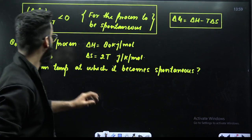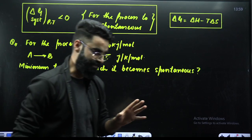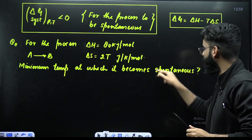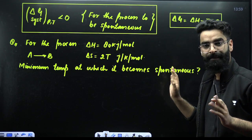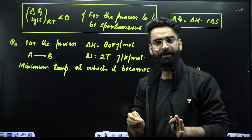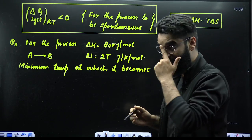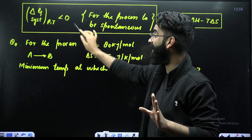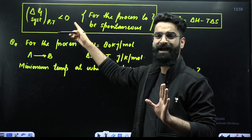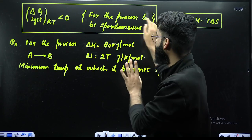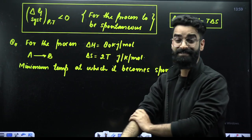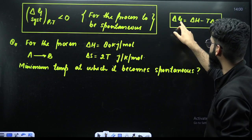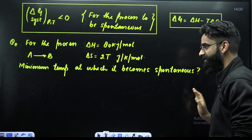Concept number 2: questions based on Gibbs free energy. A particular set of questions asks for the minimum temperature at which a process is spontaneous. For any process to be spontaneous, ΔG for the system at constant pressure and temperature has to be less than zero. This is the criteria for spontaneity. You know ΔG = ΔH − TΔS.